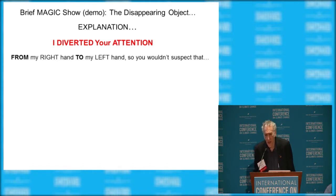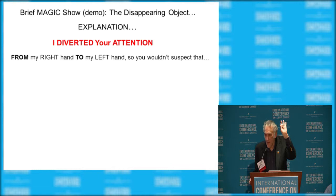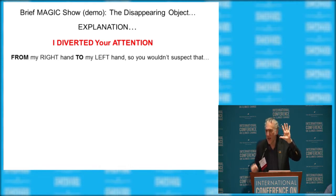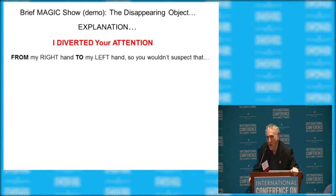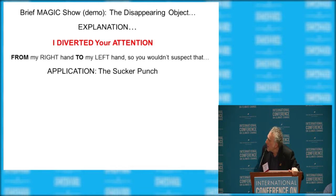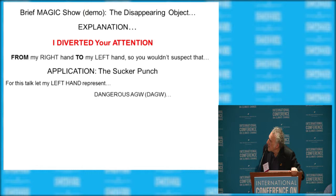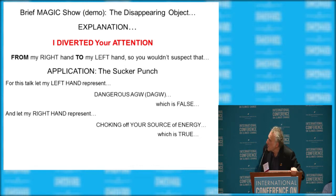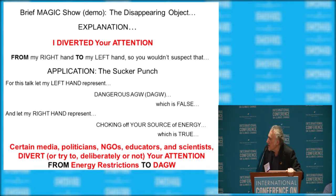I attended a magic show by Penn and Teller. This is a little magic trick — I'm going to wipe this out of existence by squashing it. What I did is I diverted your attention — that's one of the ways magic tricks work. I diverted your attention from my left hand to my right hand. The application here is what I would call the sucker punch: the left hand represents dangerous global warming, which is false, and the right hand is choking your source of energy by these restrictions, which is true. Certain media, politicians, NGOs, educators, and scientists — deliberately or not — try to get your attention focused on dangerous global warming rather than energy restrictions.